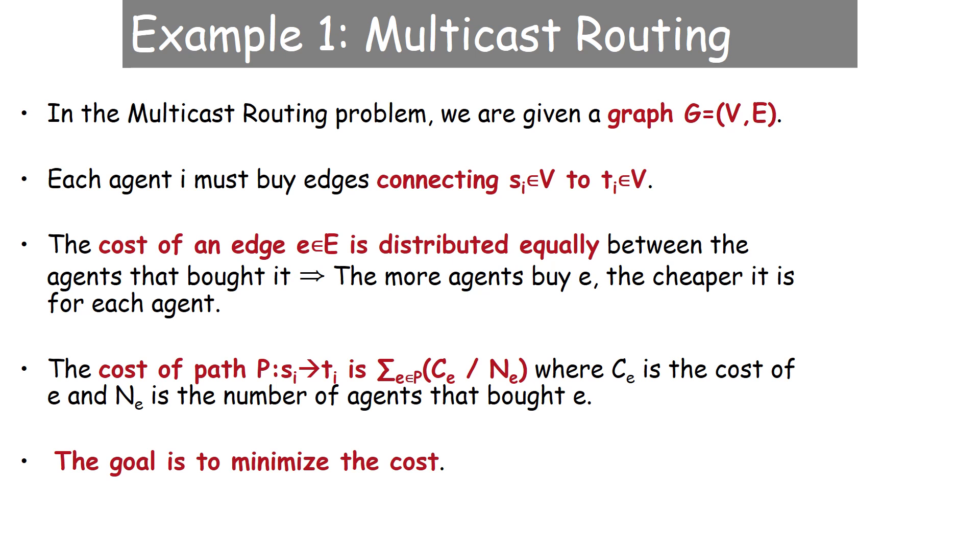So let's solve a problem - a very common problem called multicast routing. In the multicast routing problem, we are given a graph G = (V, E) where number of vertices is V and number of edges are E. Each agent i must buy edges connecting source to destination, s to t. The cost of an edge is distributed equally between agents that bought it, so the more agents buy it, the cheaper it is. The cost of the path is sigma c/n for all edges where c is the cost of the edge and n is the number of agents that bought it. The goal is to minimize the cost.